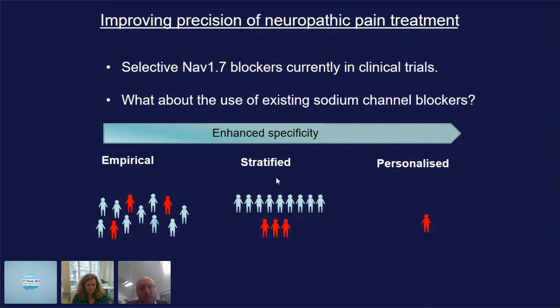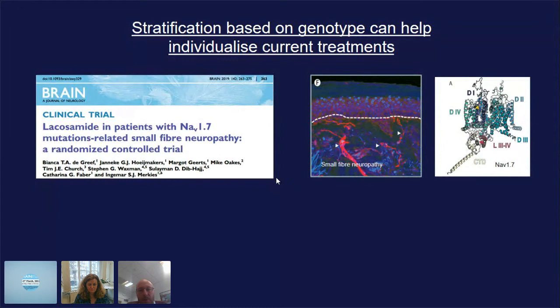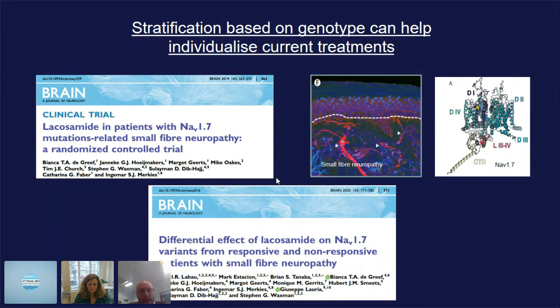There is now some evidence for stratification. Lacosamide is not tremendously successful in unselected patients with neuropathic pain. But Ingmar Merkies and Karen Faber said: we have a cohort with small fiber neuropathy and rare variants in NAV1.7 — a sodium channel sensitive to lacosamide — so maybe we can target that group. That's exactly what they did, and in a randomized controlled trial they showed significant efficacy of lacosamide in that group. They went one step further: working with Steve Waxman, they drew a nice correlation between ion channel function and pharmacology, showing that variants in which patients clinically responded to lacosamide also showed a pharmacological response to lacosamide when expressed in vitro — closing the circle.